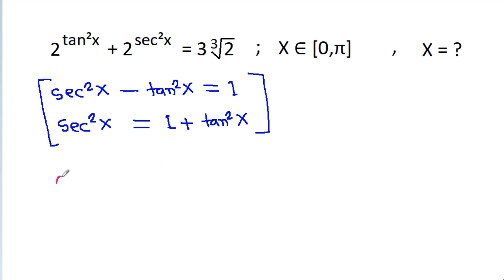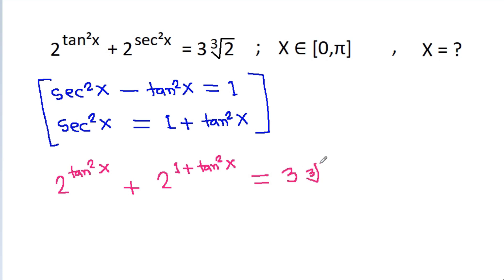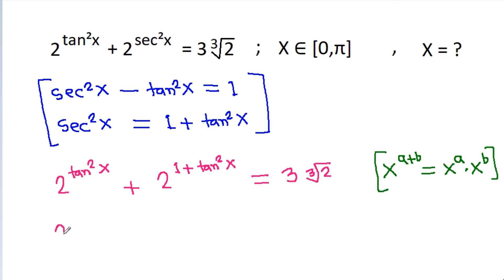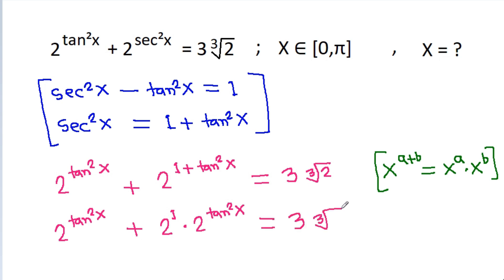So it is 2 power tan squared x plus 2 power sec squared x, which is 1 plus tan squared x, equal to 3 times cube root of 2. Using the rule x power (a plus b) equals x power a times x power b, this becomes 2 power tan squared x plus 2 power 1 times 2 power tan squared x, equal to 3 times cube root of 2.